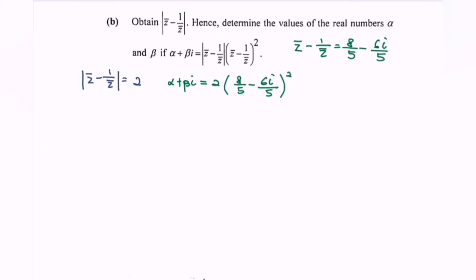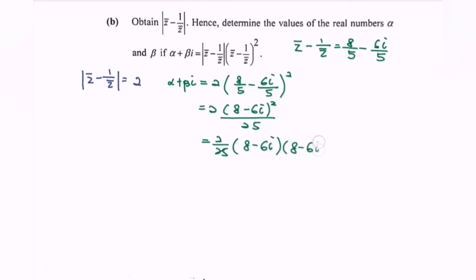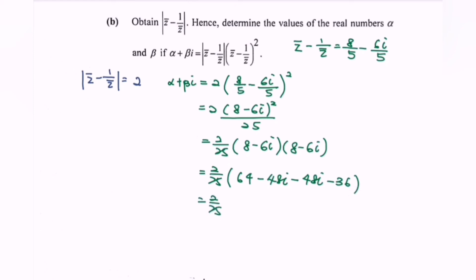Rewrite the expression as 2 times bracket (8 minus 6i) squared over 25, which becomes 2 over 25 multiplied with (8 minus 6i)(8 minus 6i). Expanding: 2 over 25 times bracket 64 minus 48i minus 48i, and rewriting gives 2 over 25 times bracket (64 minus 36) minus 96i, which is 2 over 25 times (28 minus 96i).